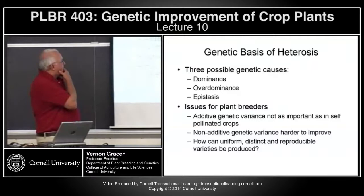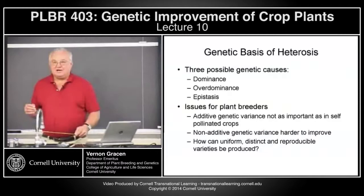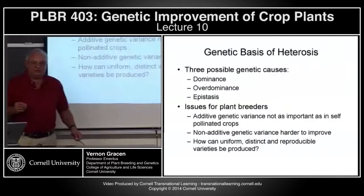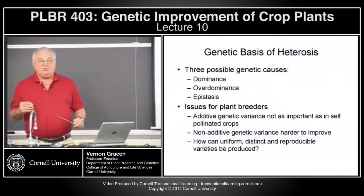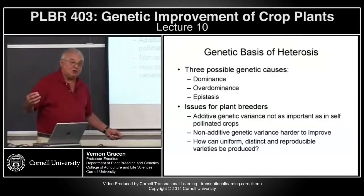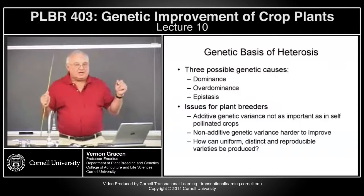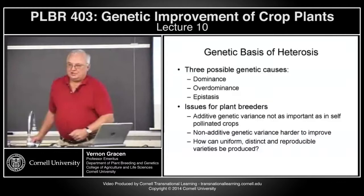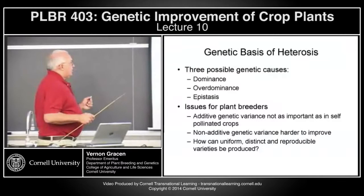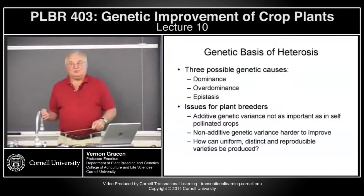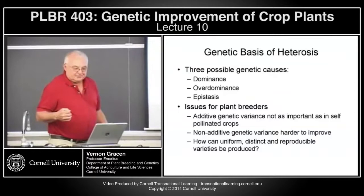In cross-pollinated crops, additive genetic variance is not all that important, and non-additive genetic variance is very important if these are the mechanisms of heterosis. But how do you predict, control, or measure non-additive genetic components? We can somewhat grasp dominance relationships, but when we try to get our minds around interaction between different loci — which involves over-dominance or epistasis — it's hard to conceptualize.